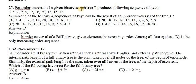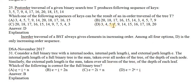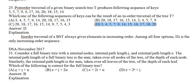Next: post-order traversal of a given binary search tree produces the sequence 3, 5, 7, 9, 4, 17, 4, 16, 20, 18, 15, 15, 14. Which of the following sequences can be the result of inorder traversal? There is a very simple logic: if you represent the binary search tree with inorder traversal, then the data will be in sorted ascending order. So whichever sequence option is in ascending order, that is the answer: 3, 4, 5, 7, 9, up to 20. That sequence is in sorted order — that is your answer.